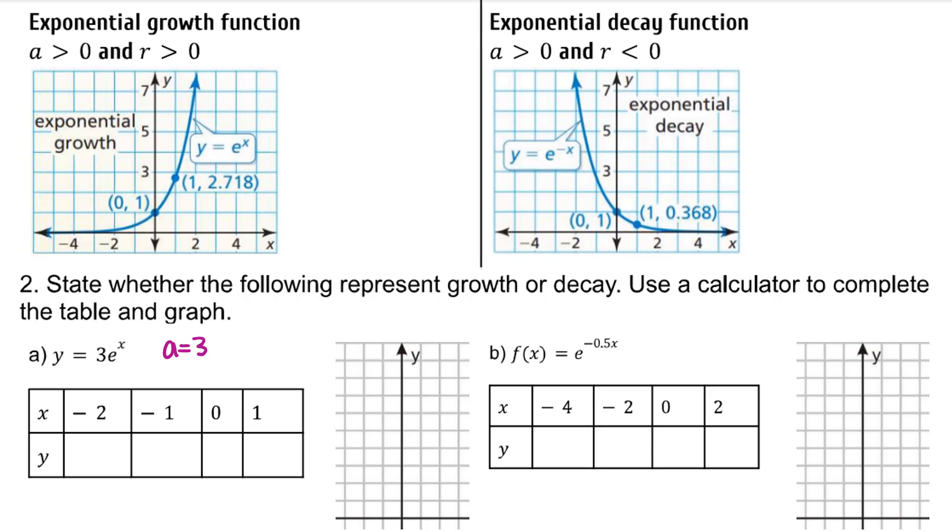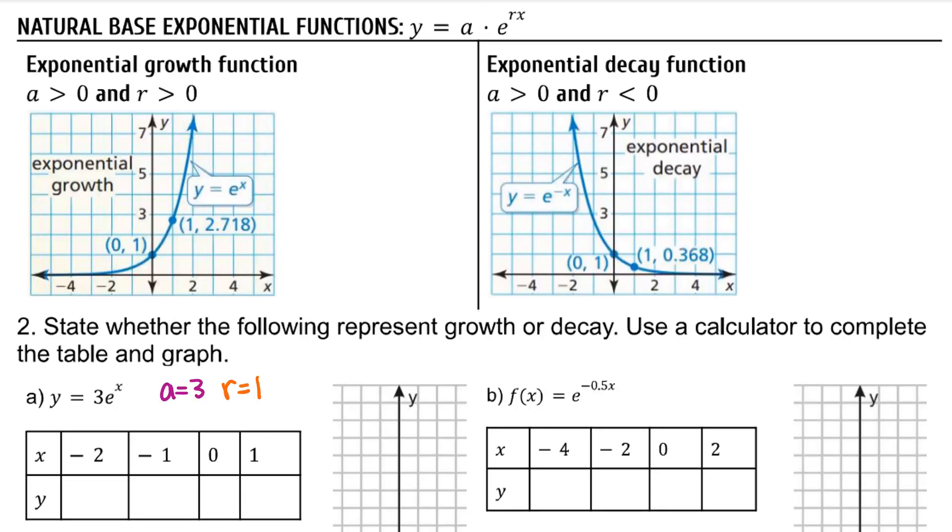For part A, A is equal to 3, which is positive, and r, the coefficient of x, is 1, which is also positive. So part A represents exponential growth. Plug these into a calculator.